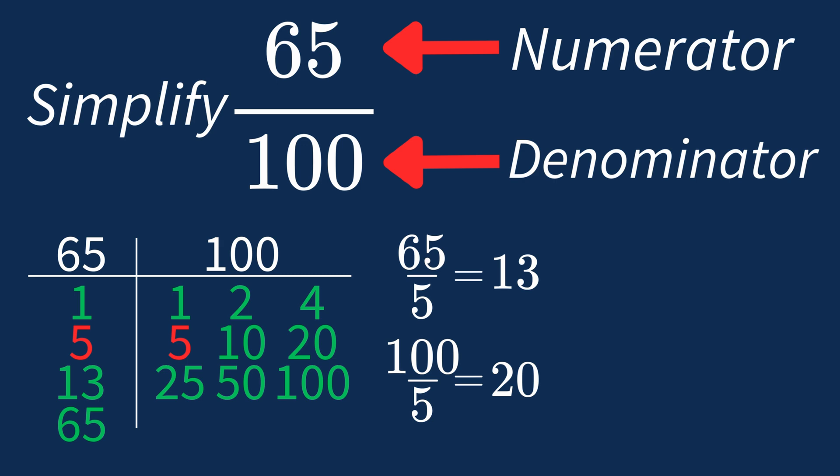So after dividing, the simplified fraction is 13 over 20. And we know that 13 over 20 is in its simplest form, because the only common factor between 13 and 20 is 1. And when 1 is the largest common factor, we know that fraction is already in its simplest form.